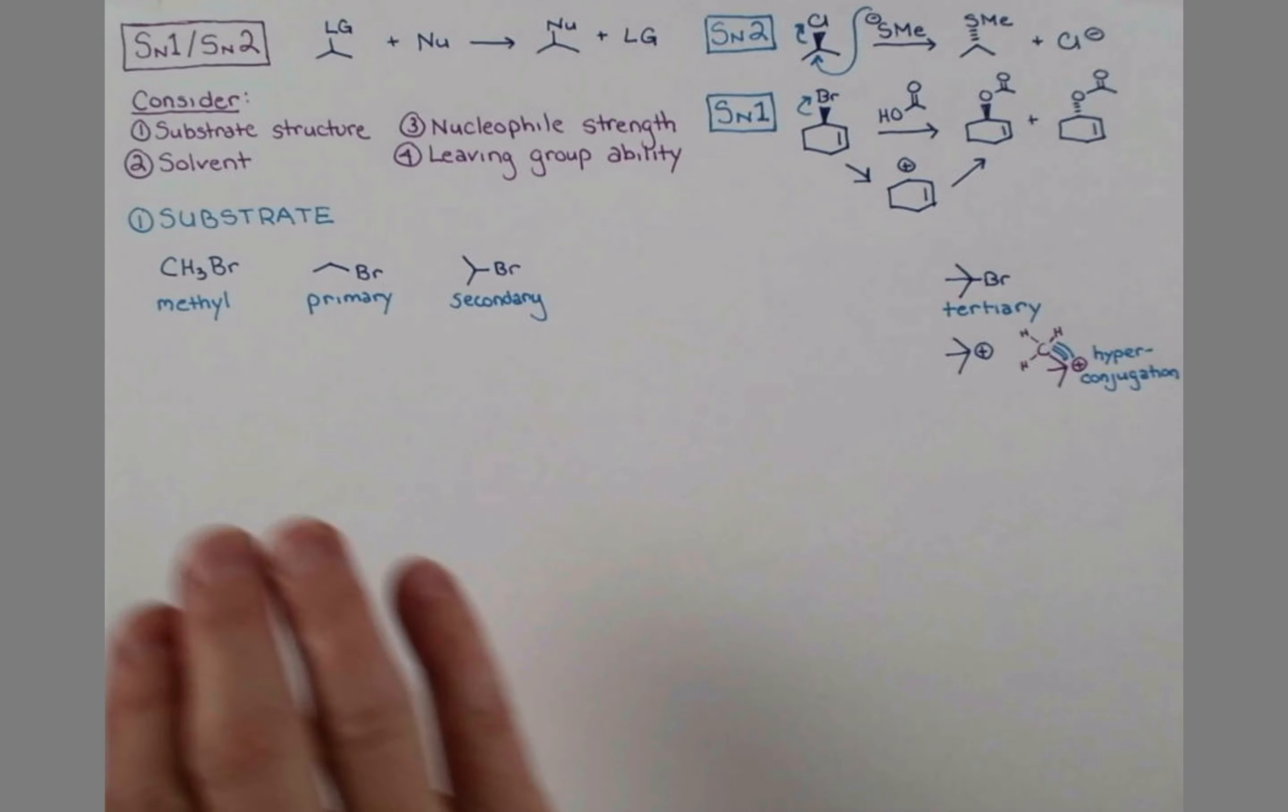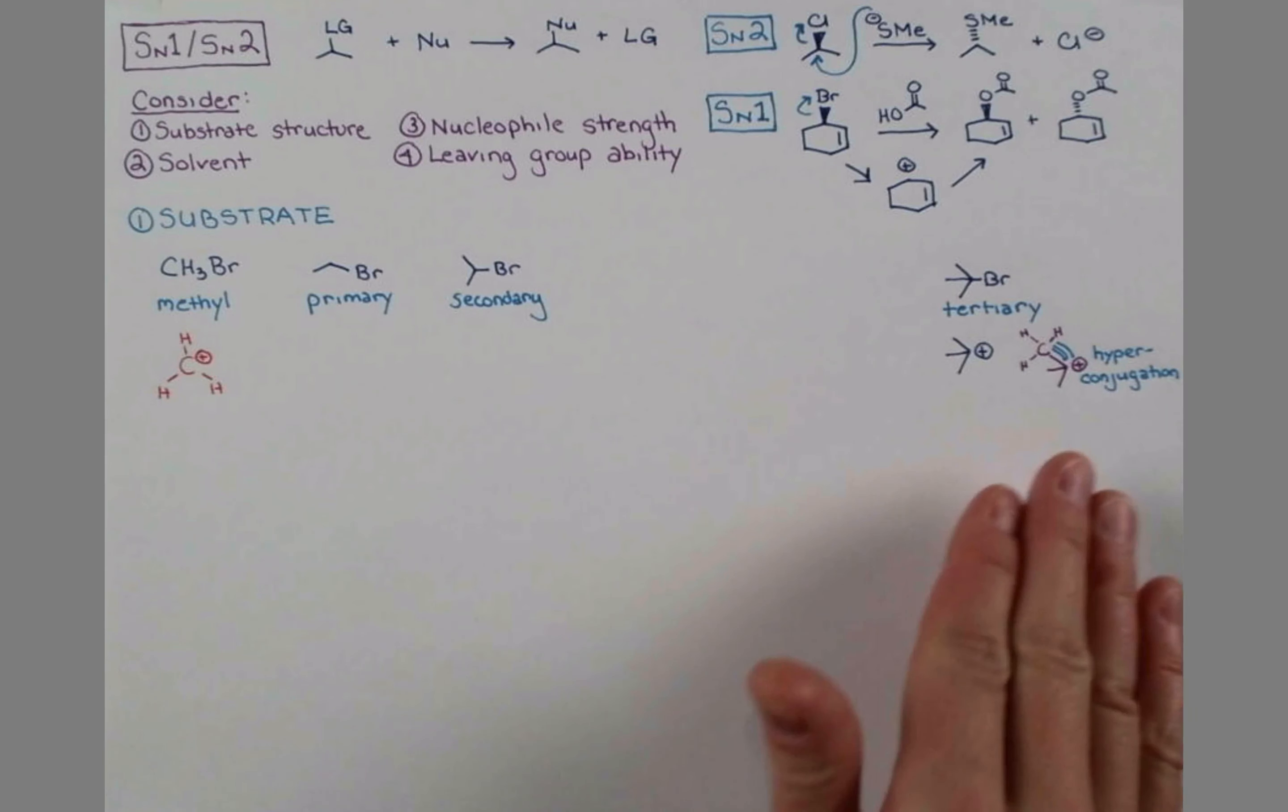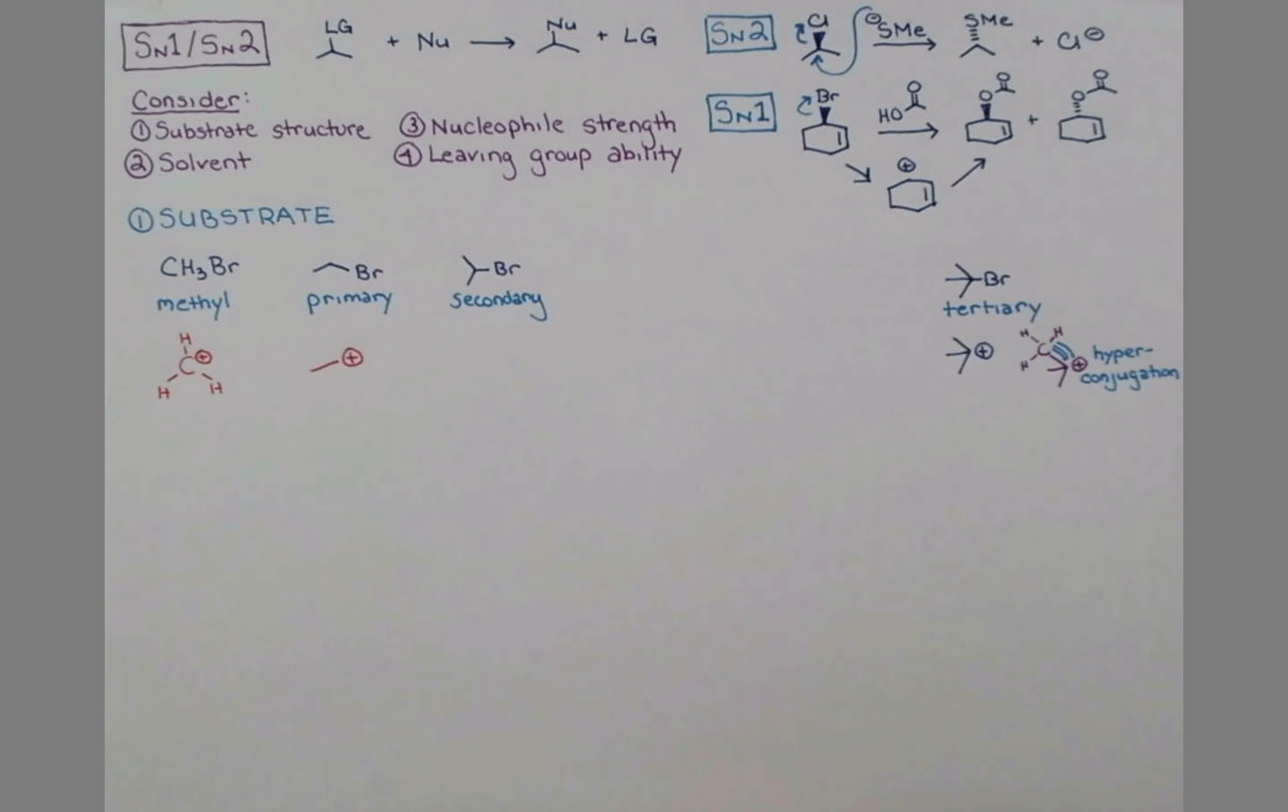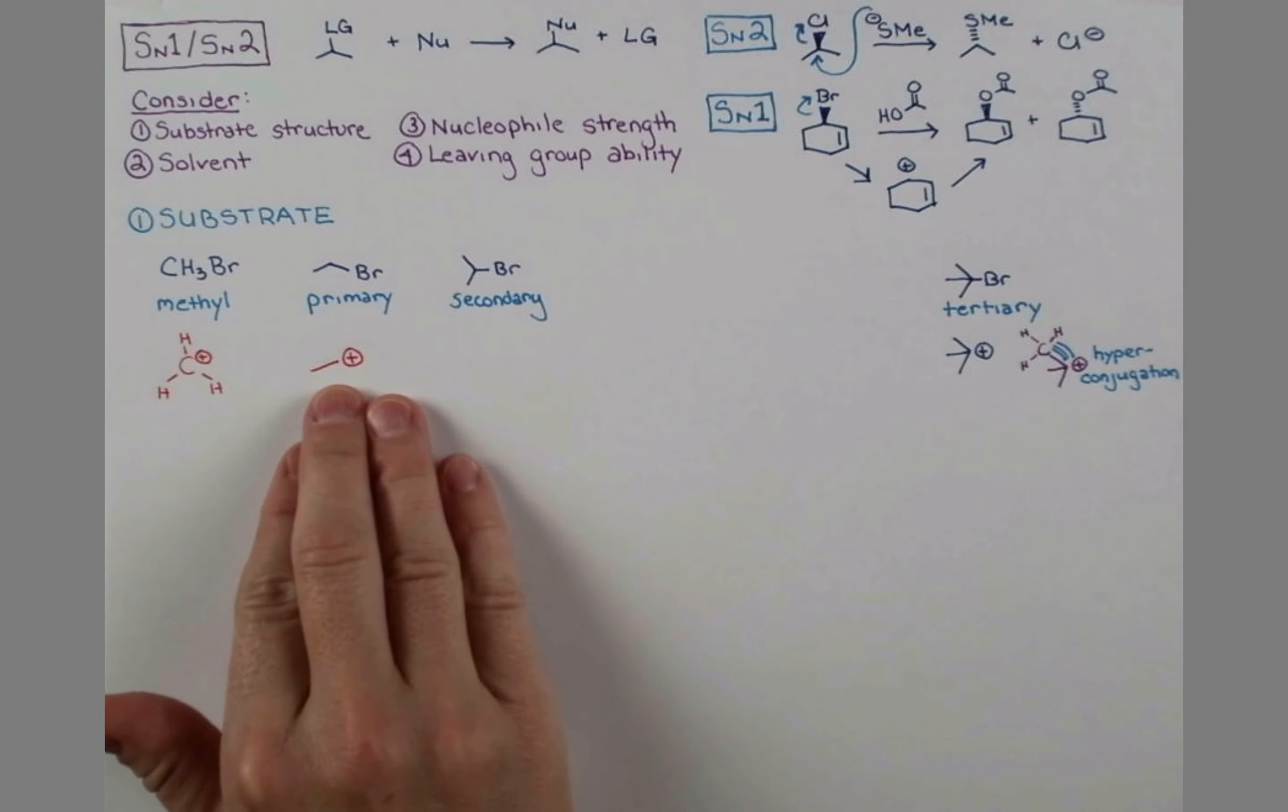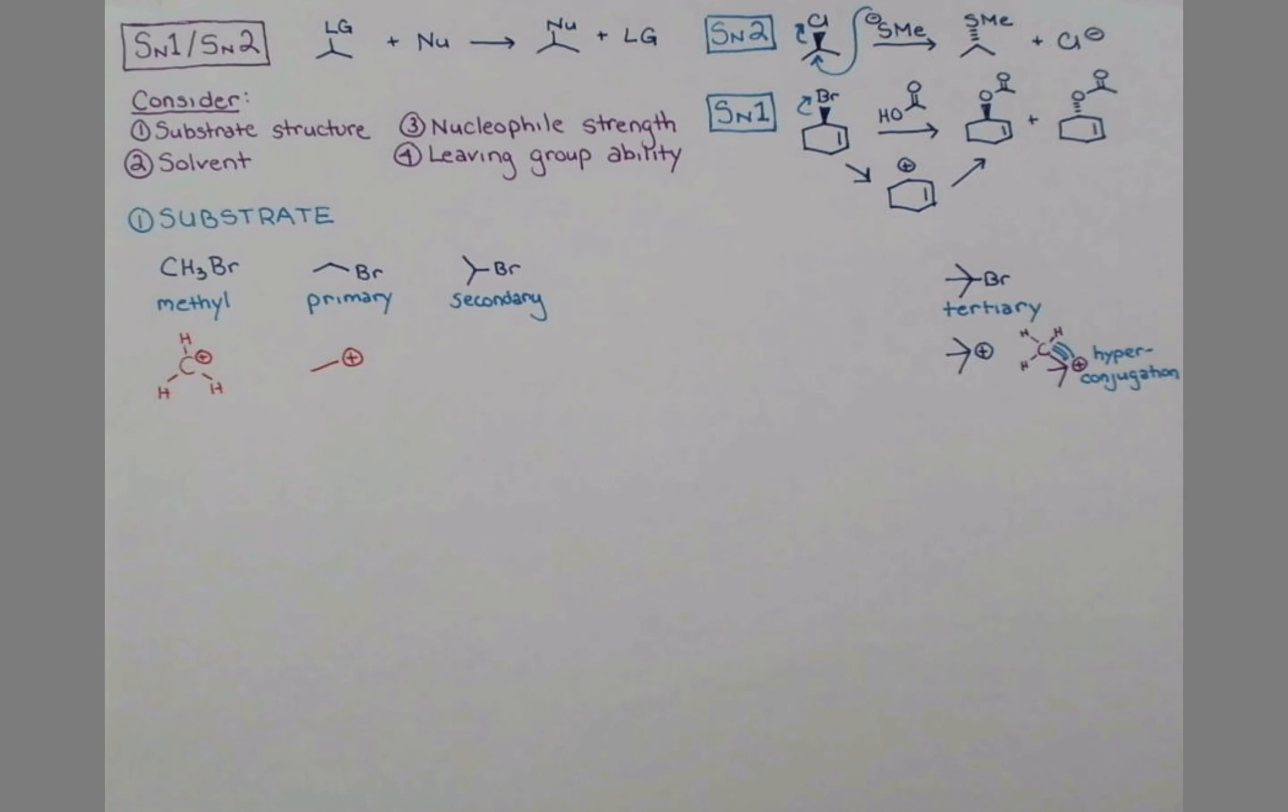On the opposite end of the spectrum, this methyl bromide, if it were to form a carbocation—spoiler alert, it doesn't, we're going to draw this one in red—it would look like this. Since it's these nearby bonds that offer the stabilization to the carbocation, this has none of that. We just have a carbon with all hydrogens around it, and this carbocation cannot form. Primary is really bad too. Our primary carbocation would look like this. We have one CH3 hanging off here. Doesn't offer a lot of stabilization.